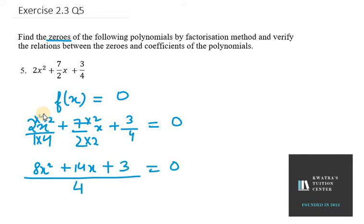Now, we need to bring 4 to the right hand side. So it will be 0 only. 0 times 4 is 0. So, 8x squared plus 14x plus 3 equals 0.